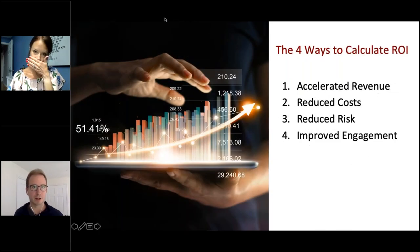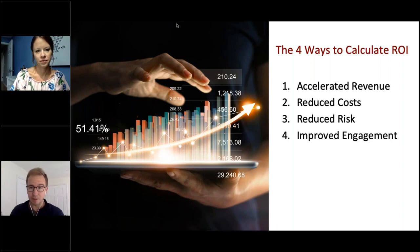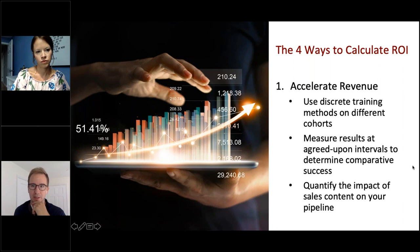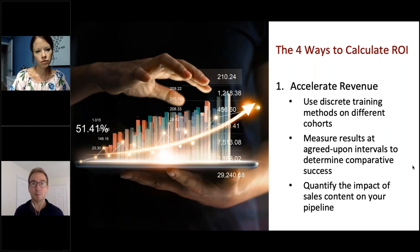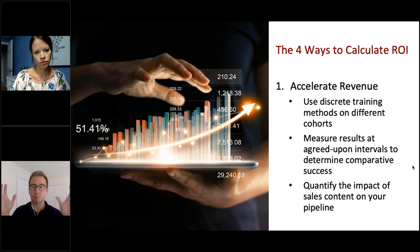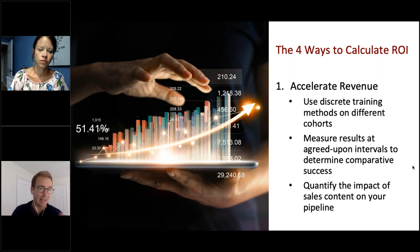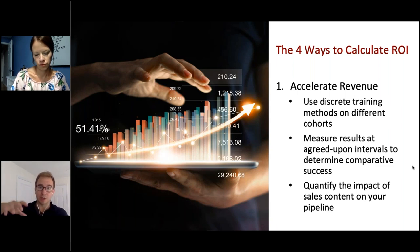So four different ways to calculate ROI: accelerated revenue, reduced costs, reduced risk, and improved engagement. Let's take a closer look at each. When it comes to accelerating revenue, we want to know that sales training and enablement has an impact on revenue — ideally, we're getting more revenue and closing deals faster. This plays a little into the one-size-fits-all challenge. Rather than rolling the same training out to your entire team in exactly the same way, it might be useful to use discrete training methods on different cohorts of people so you can track those cohorts against each other over time.